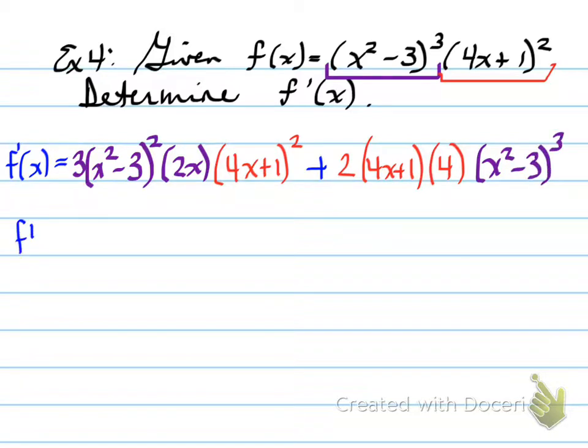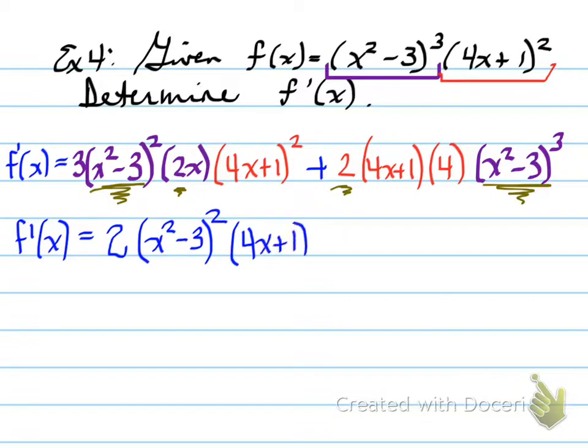And then, what we'll do for f prime of x, and it needs to be simplified, is you will see that both of these sides have some common factors that we can take out. So, we can both take out a 2 from here and here, we can take out x squared minus 3 from both, two of them from both of these, and we can take out a 4x plus 1 from both of these, but only one of them. So, that you have 2x squared minus 3 squared times 4x plus 1 times the left over. What is the left over? So, you notice it's all crossed out.